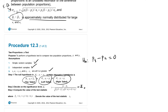...p-hat-sub-p times (1 minus p-hat-sub-p) times the square root of (1/n1 plus 1/n2), where p-hat-sub-p is called the pooled sample proportion.